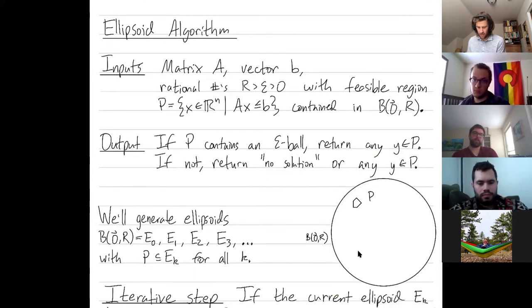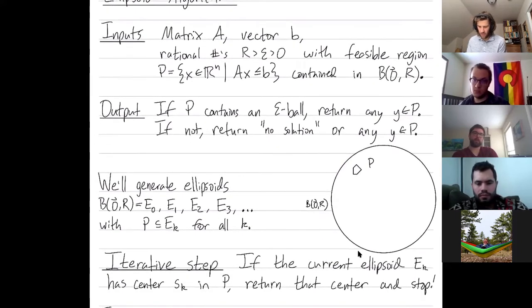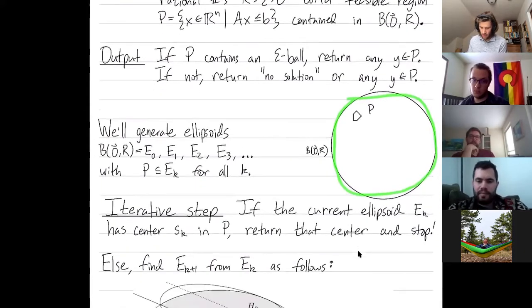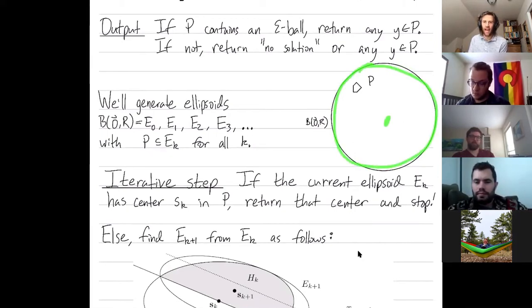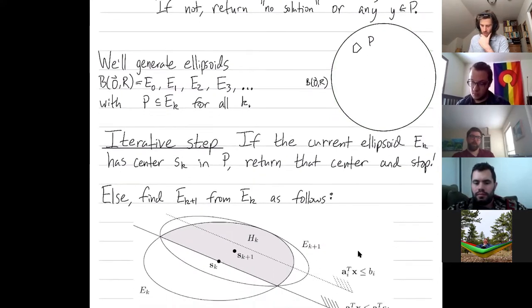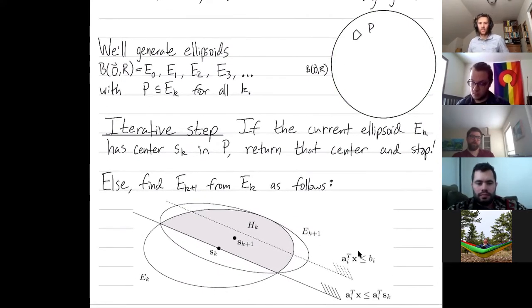So what does the iterative step look like? We start with this outside ball as our initial ellipse. So if our current ball happened, if our current ellipsoid happened to have its center inside the feasible region, just return that center, we're done.